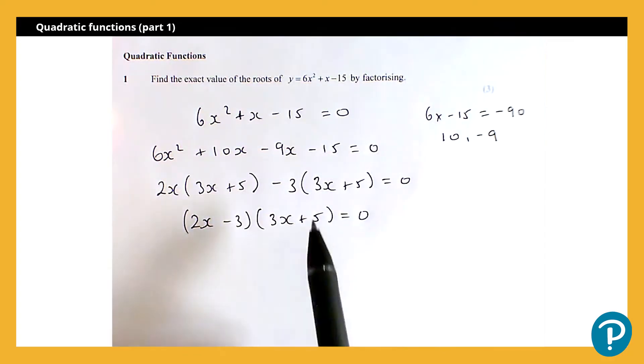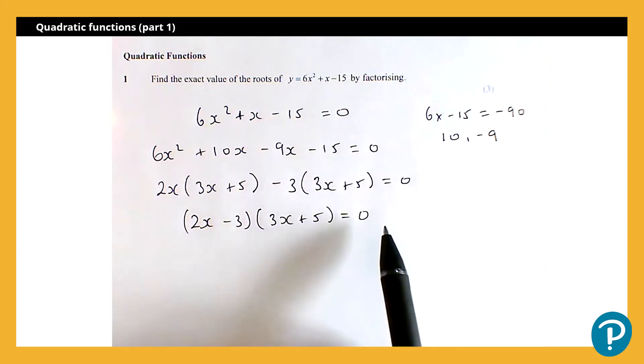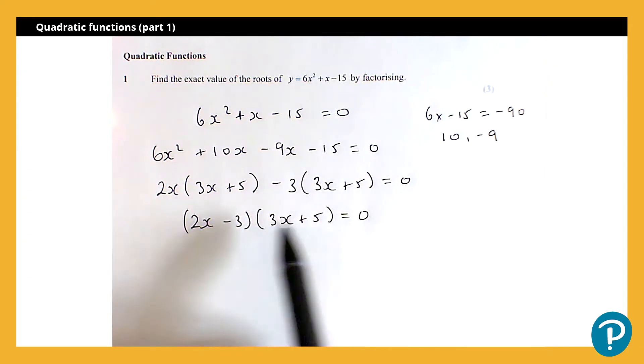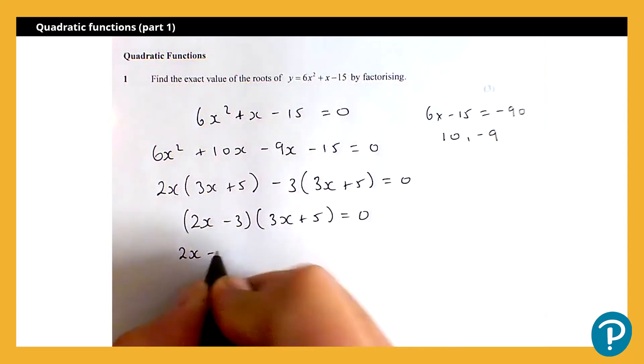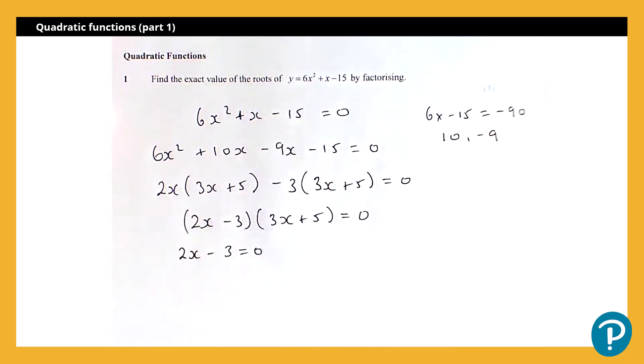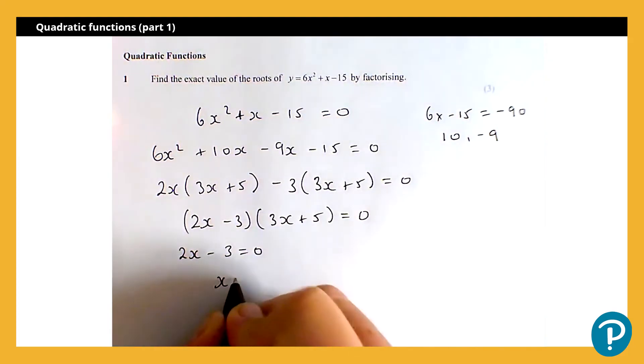Now for this product here to be equal to 0, as we're well aware that means that one of these expressions is 0. So dealing with them separately, 2x subtract 3 equals 0 leads me to x is equal to 3 over 2.